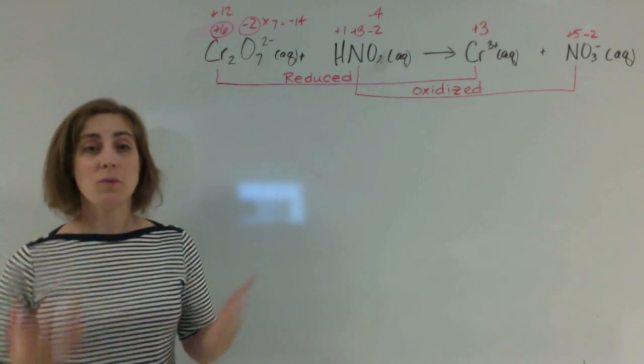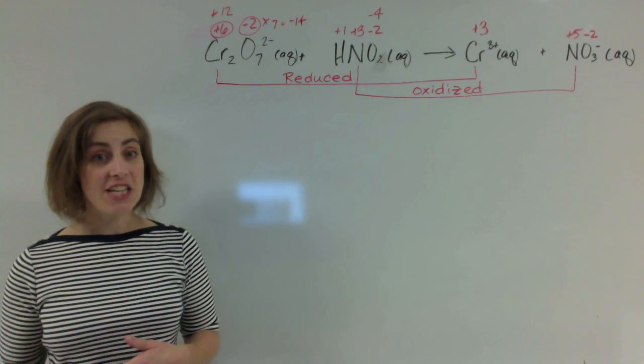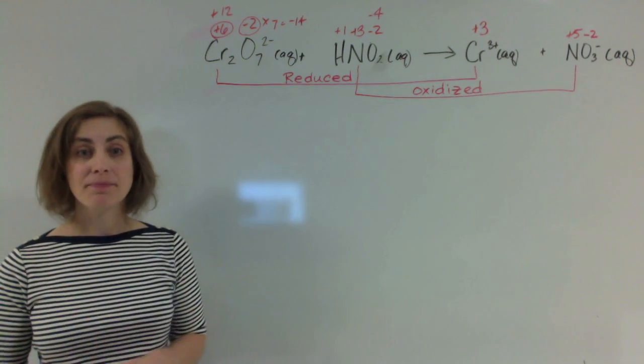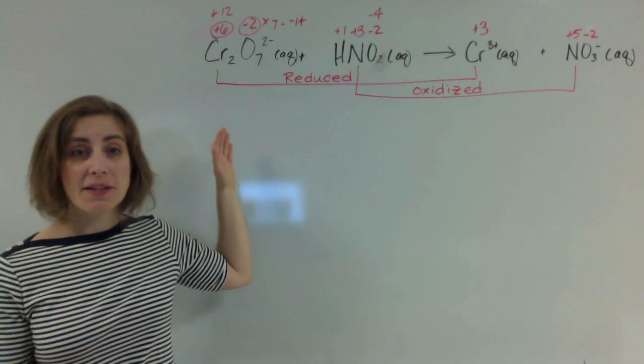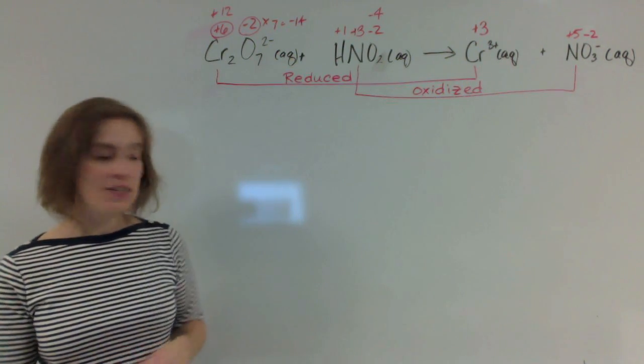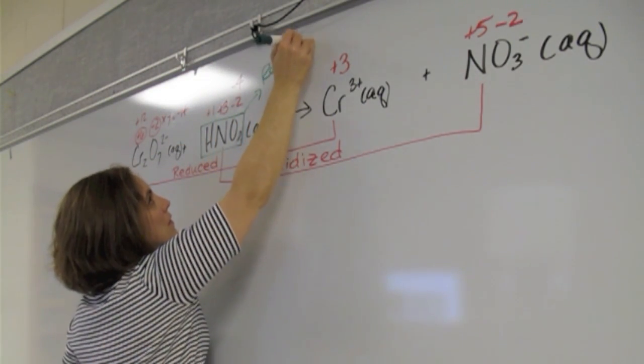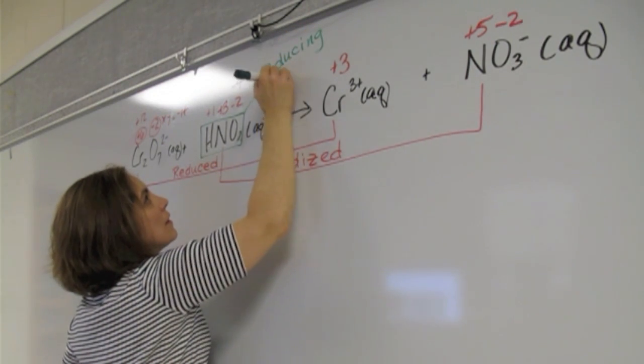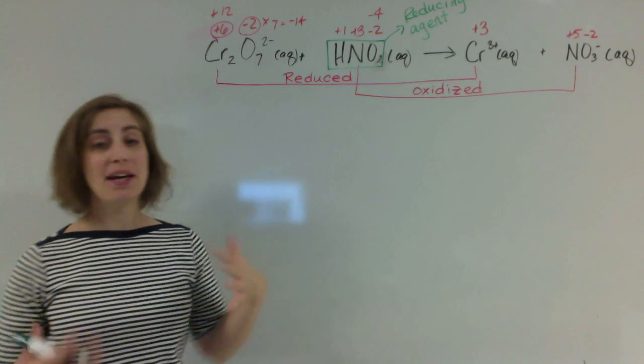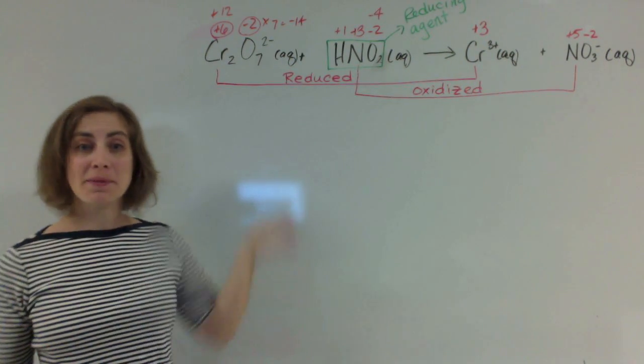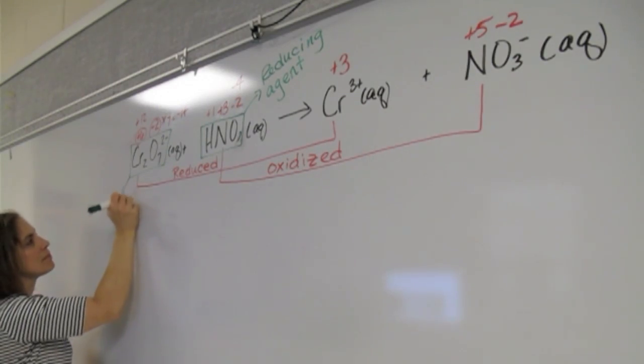We've now figured out what's been oxidized and what's been reduced. We can also figure out what the oxidizing agent and reducing agent are in this reaction. What helped chromium become reduced? Well, what did it react with? Nitrous acid. Nitrous acid is considered the reducing agent because it helped the chromium in the dichromate become reduced. Likewise, what helped the nitrogen become oxidized? Well, the dichromate. That means the dichromate is the oxidizing agent.